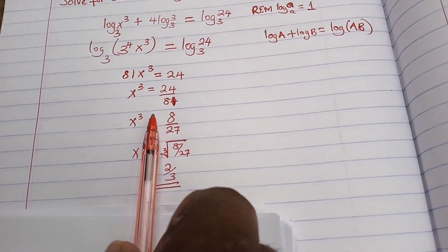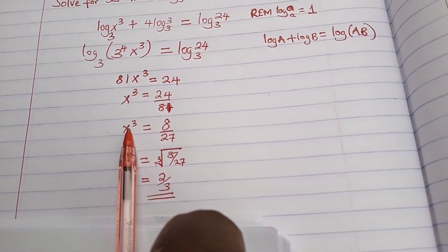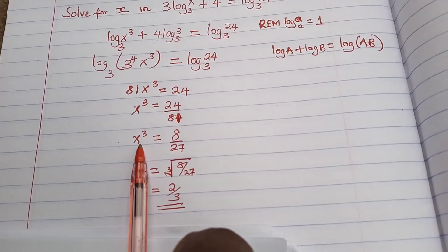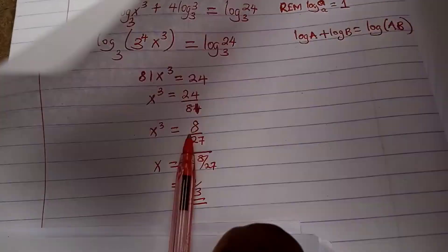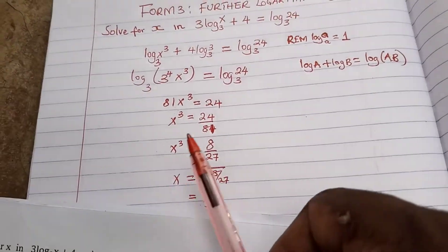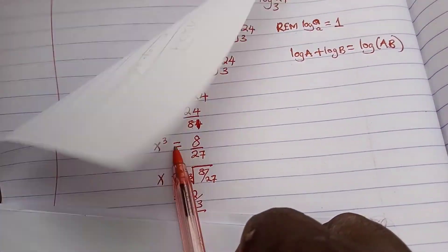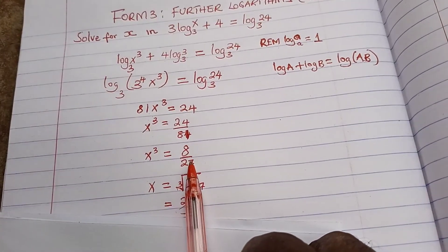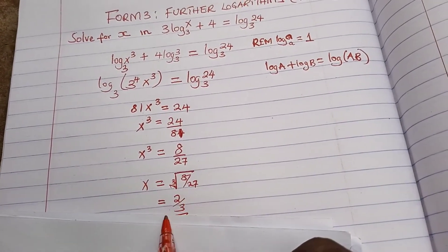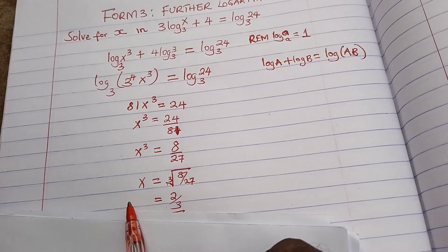Now from here we will find the cube root of both sides. You can see the cube root of x cube is x, and the cube root of 8 over 27 is 2 over 3. Therefore the value of x is 2 over 3.